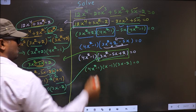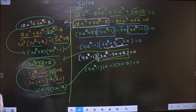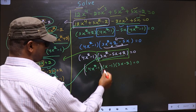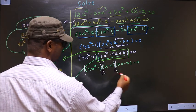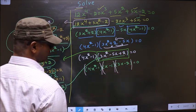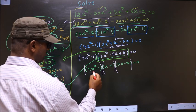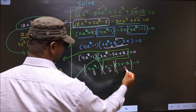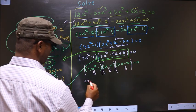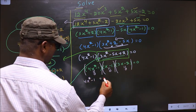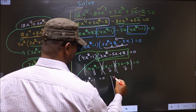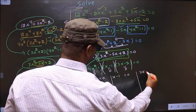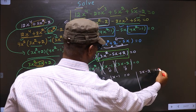They told us to solve, so we should find the values of x. Here we got a product of brackets equal to 0. So to get the values of x, you equate each bracket to 0. That is 4x squared minus 1 equal to 0, x minus 1 equal to 0, and 3x minus 2 equal to 0.